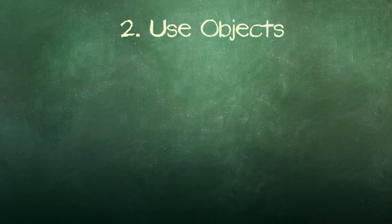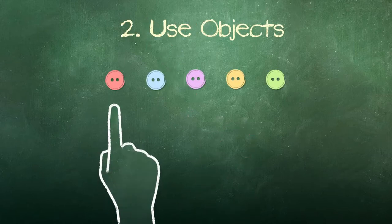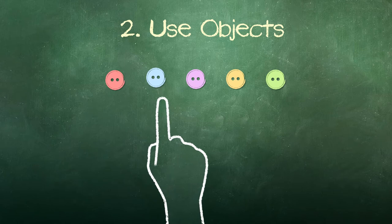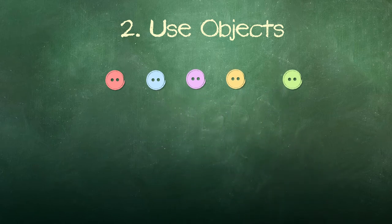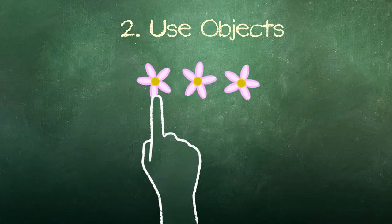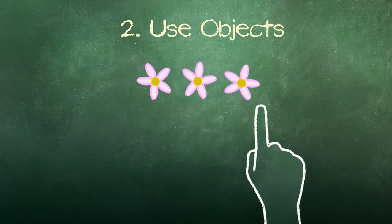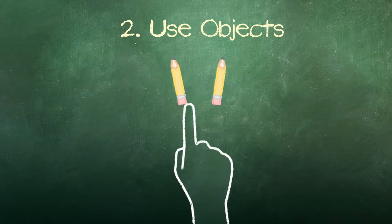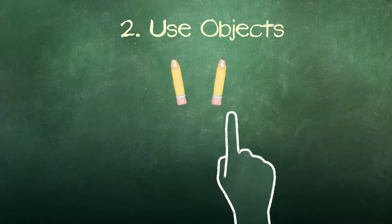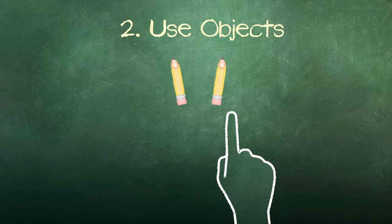Second, use objects that students can touch. One, two, three, four, five, five buttons. One, two, three, three flowers. One, two, two pencils. This helps them give meaning to numbers.